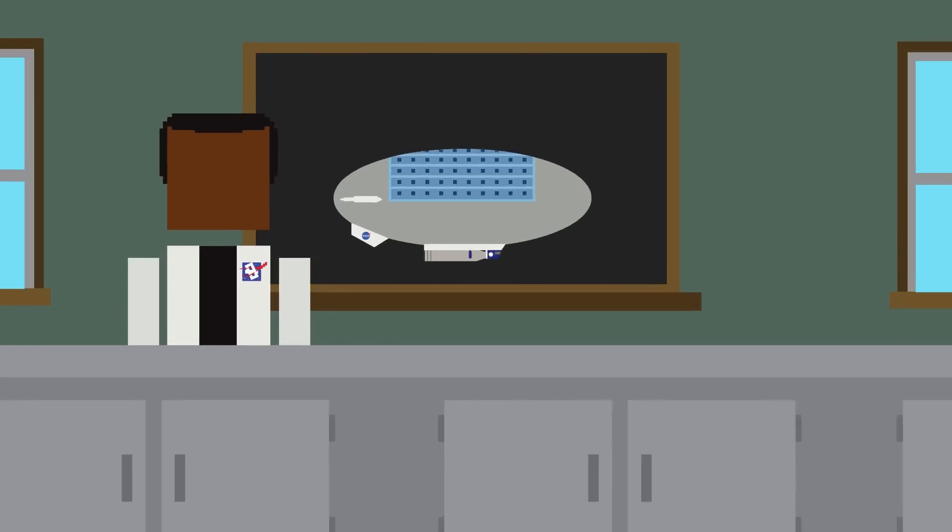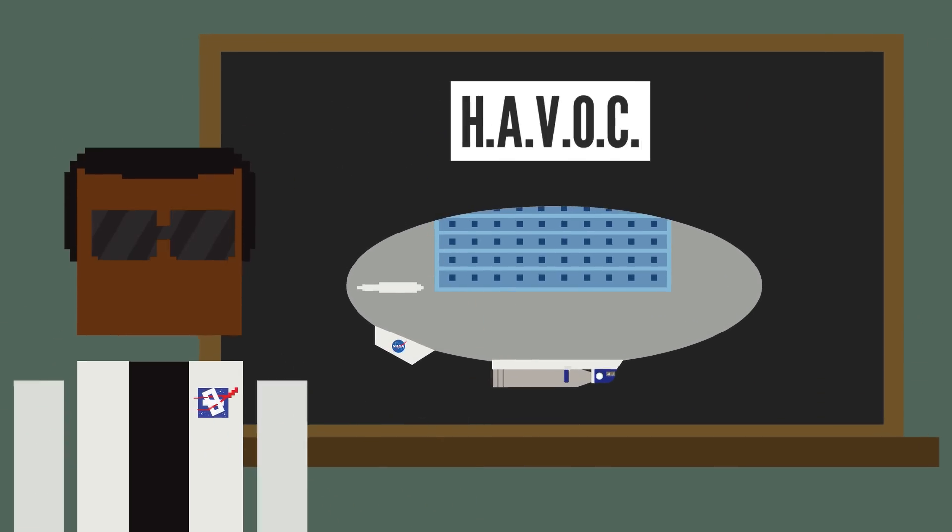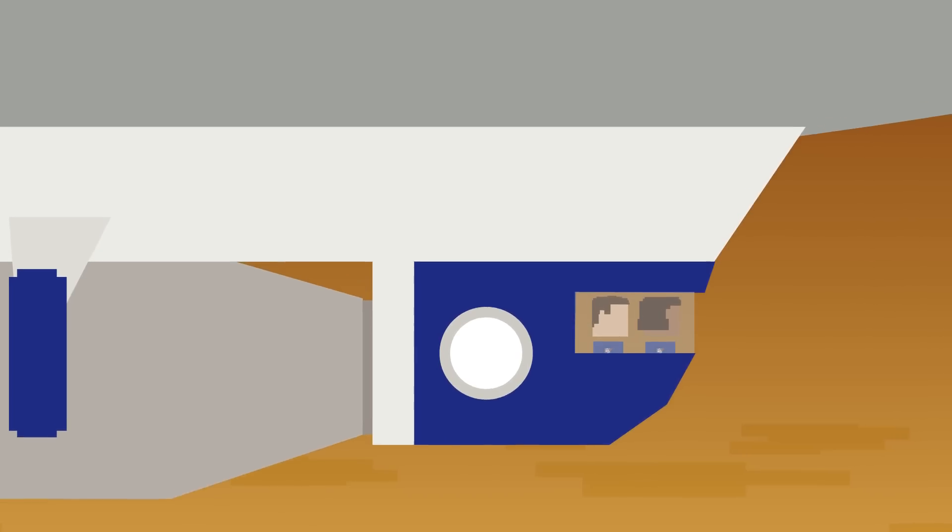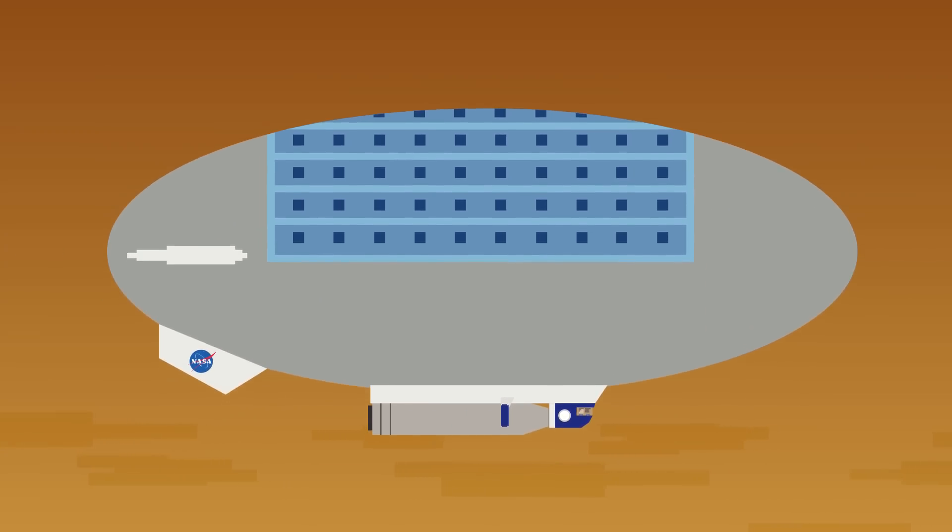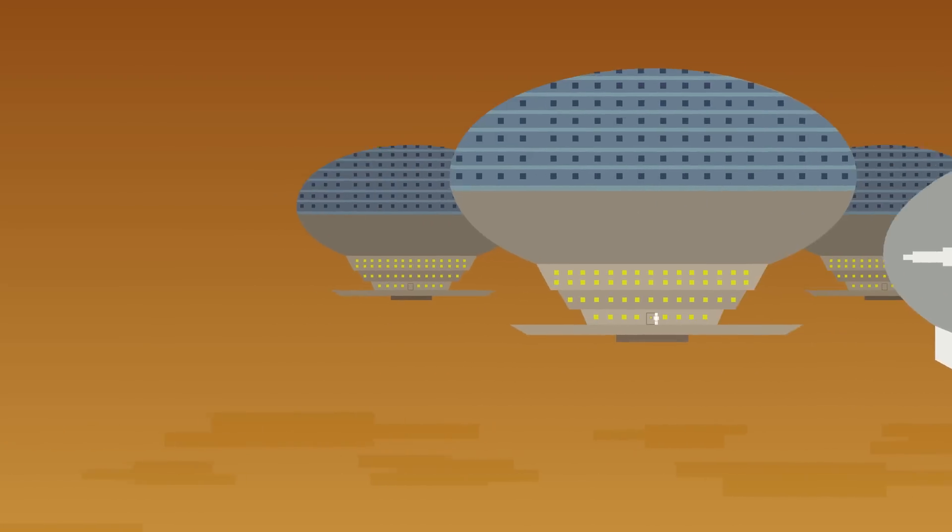In 2015, NASA announced their High Altitude Venus Operational Concept, AKA HAVOC, which I feel like isn't the most optimistic name for a space mission. This project would send two astronauts to Venus' upper atmosphere, hovering in spaceships above the clouds. This initial trip would last 30 days and could lead to future colonization of Venus' airspace.